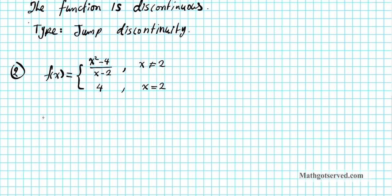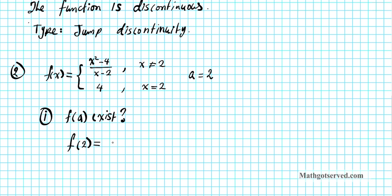Test 1: does f(a) exist? Here a = 2, the point where the switch happens. Is f(2) defined in this function? Yes — the output is 4, so f(2) is defined.